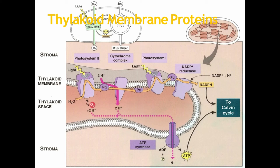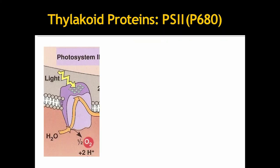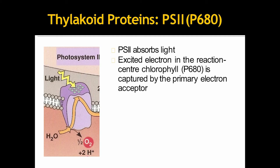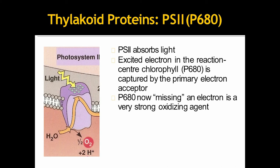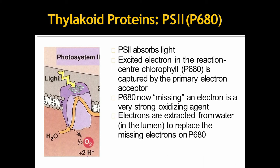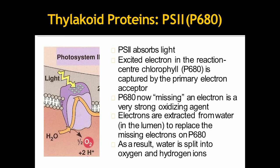We will know about them in detail in next. First one, the photosystem 2, that means P680. PS2 absorbs light. Excited electron in the reaction center chlorophyll is captured by the primary electron acceptor. So, P680 now missing an electron is a very strong oxidizing agent. So, the electrons are extracted from water in the lumen to replace the missing electrons on P680. As a result, the water is split into oxygen and hydrogen ions. This mechanism is also known as hydrolysis.